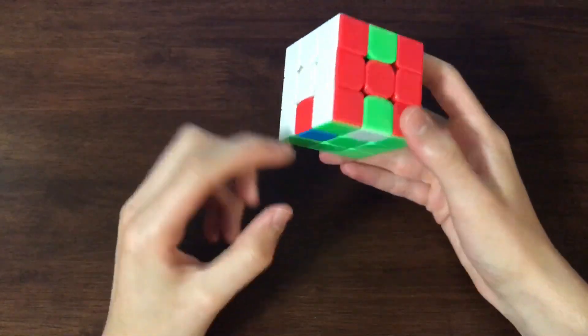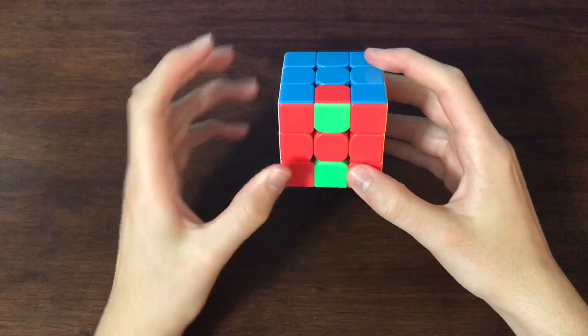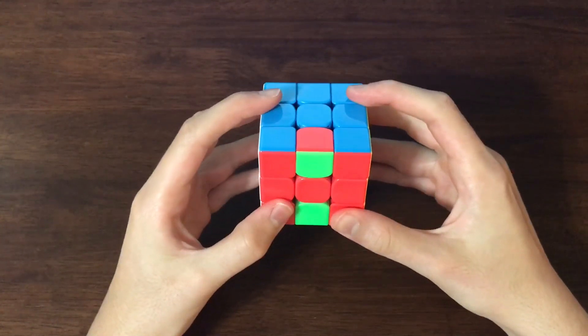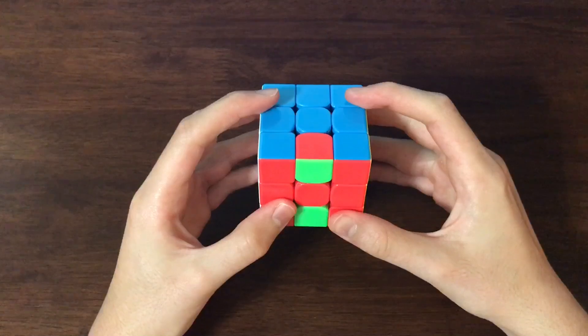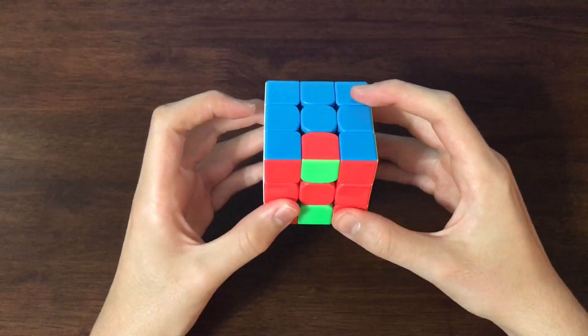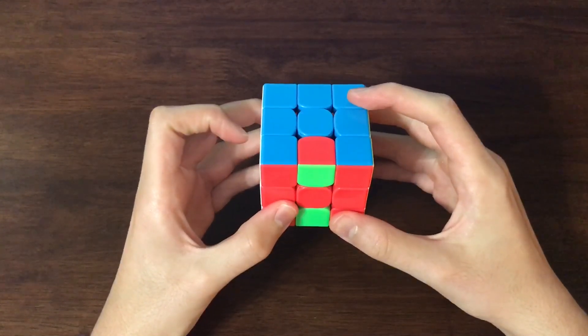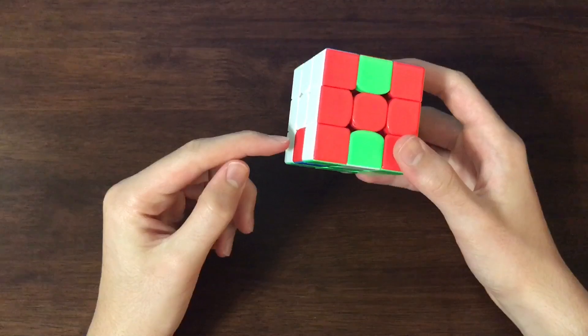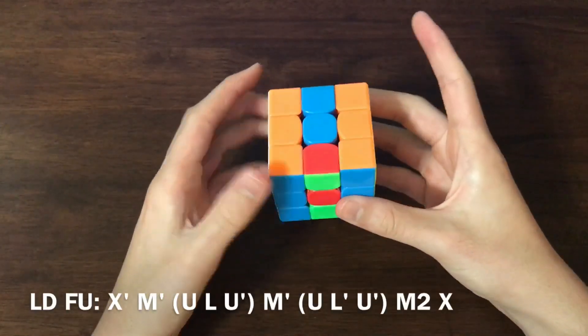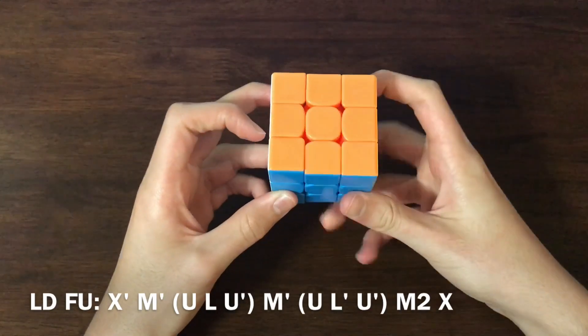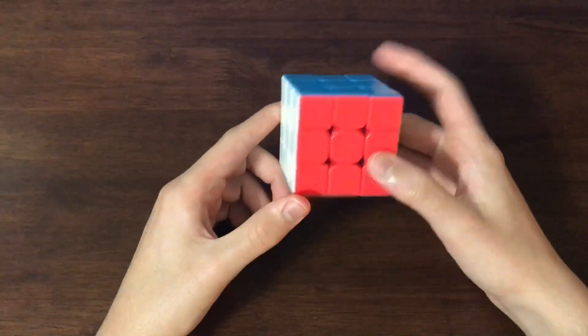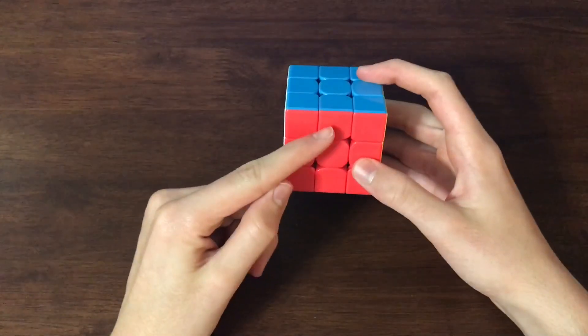The next case we have is LD, FU. And the pattern for FU as the second target is to do an M prime, then the setup move, and M prime, undo the setup move, and then do an M2. So, since we have FU as the second one, we're going to do M prime, our setup move, M prime, undo the setup move, and then an M2. And as we can see, that solves LD and FU.